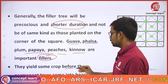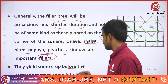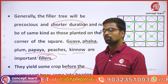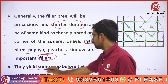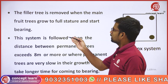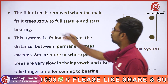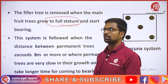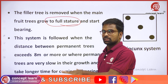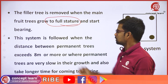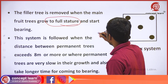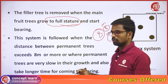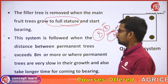They yield some crop before the permanent trees come into bearing. Once the Filler Trees finish bearing, they are removed when the main fruit trees grow to full stature and start bearing. That's why we remove the short-duration Filler Trees. This system is followed when the distance between plants is 8 meters or more.